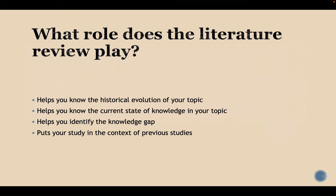I want to talk about the role that the literature review chapter plays in the entire PhD thesis proposal and the thesis itself. The literature review helps you to know the historical evolution of your topic — what did the problem originate, who started examining it, who started researching it, and how has it evolved over time. What are other researchers finding? What is the current state of knowledge in your topic?